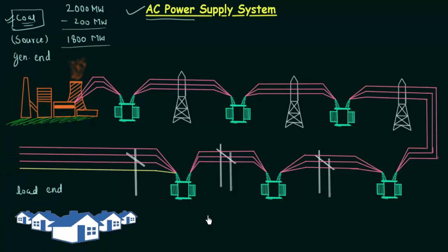For nuclear power plants, we cannot construct them near the load because nuclear fission requires radioactive material. From a safety point of view, nuclear plants must be located away from human populations. For hydro power plants, we need a river or water source, and dams must be constructed in hilly regions to hold water and avoid flooding. Not all loads are in hilly regions, so again we are required to transmit AC power over long distances.